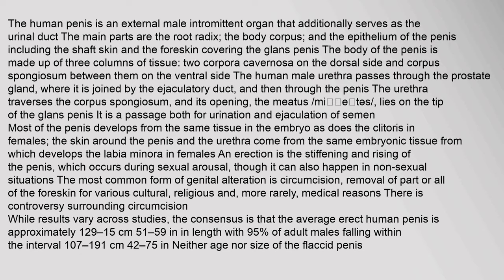The human penis is an external male intermittent organ that additionally serves as the urinal duct. The main parts are the root (radix), the body (corpus), and the epithelium of the penis including the shaft skin and the foreskin covering the glans.